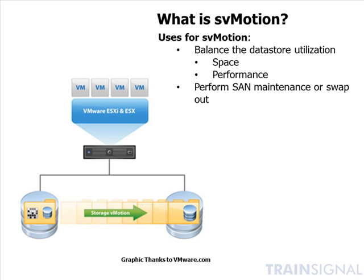Storage vMotion is also a great way to perform SAN maintenance or swap out. If you have an older SAN and you're moving to a brand new SAN on lease, you can use Storage vMotion to move virtual machines from the old SAN to the new SAN with no downtime. You could also use Storage vMotion for SAN maintenance — swapping out a storage array processor or upgrading cache memory. Move the VMs off to another SAN or to local ESX disk, perform the maintenance, and then move those virtual machines back.